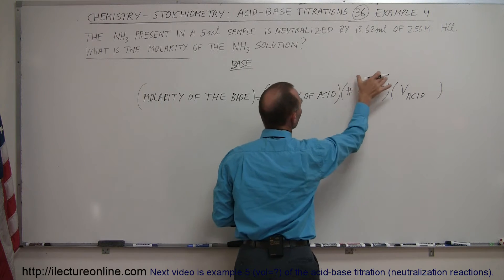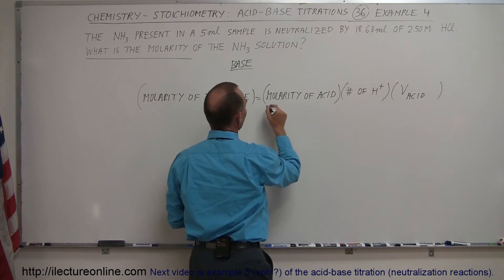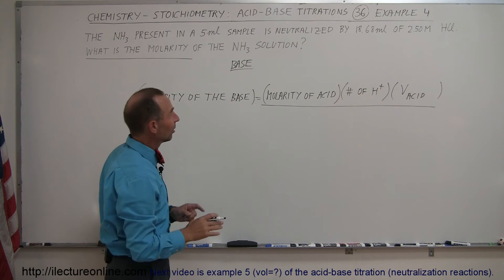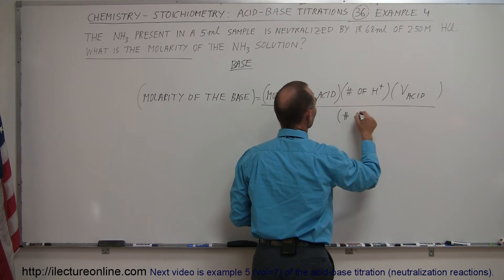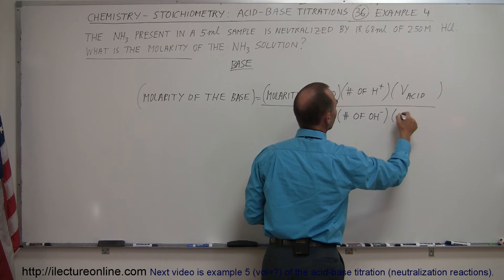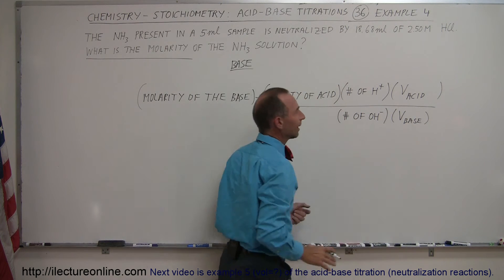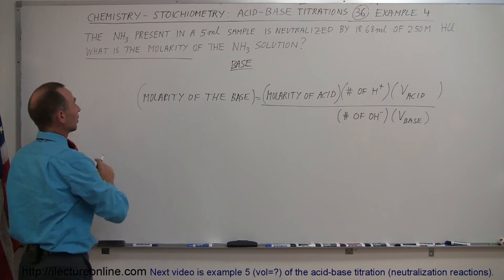So notice that in the numerator we have all the information about the acid and then in the denominator we place all the information about the base. So again the base will produce hydroxide ions and we need to know the volume of the base. There, that's what this equation looks like for this particular problem.